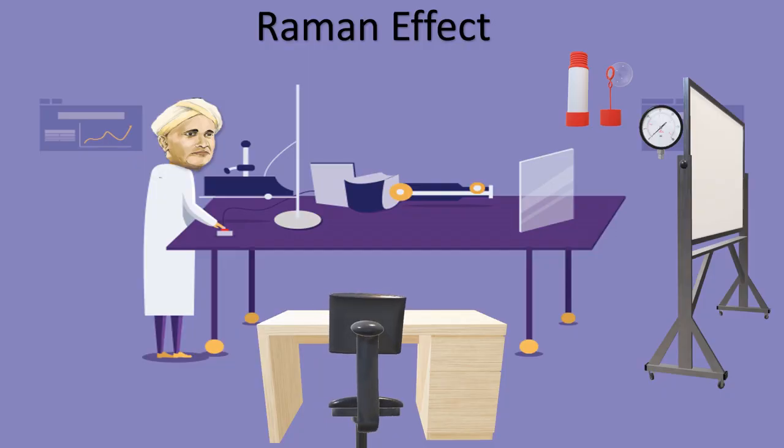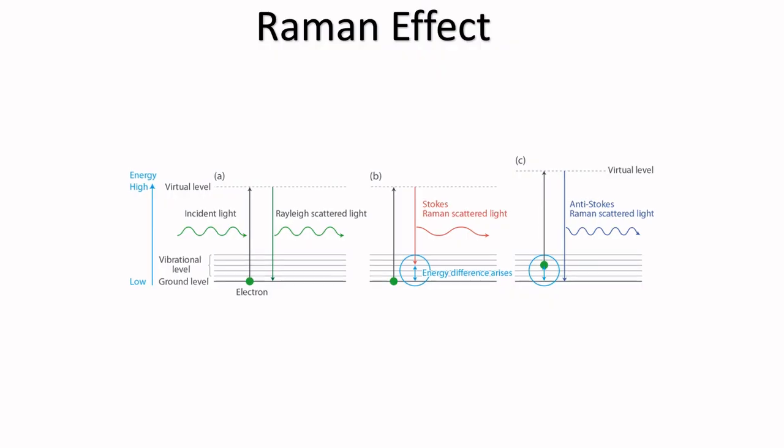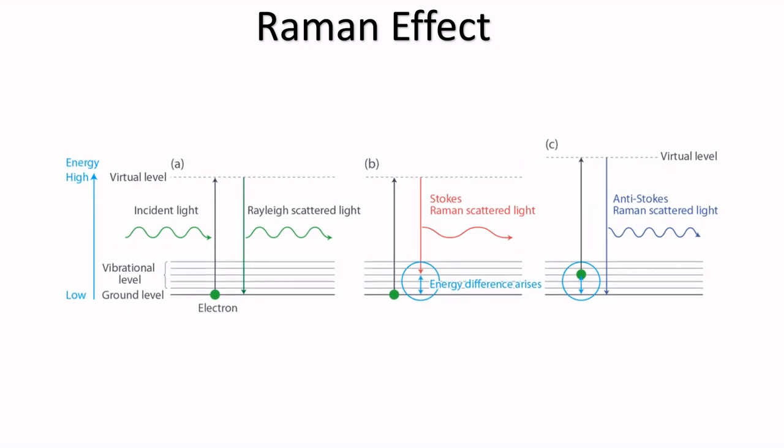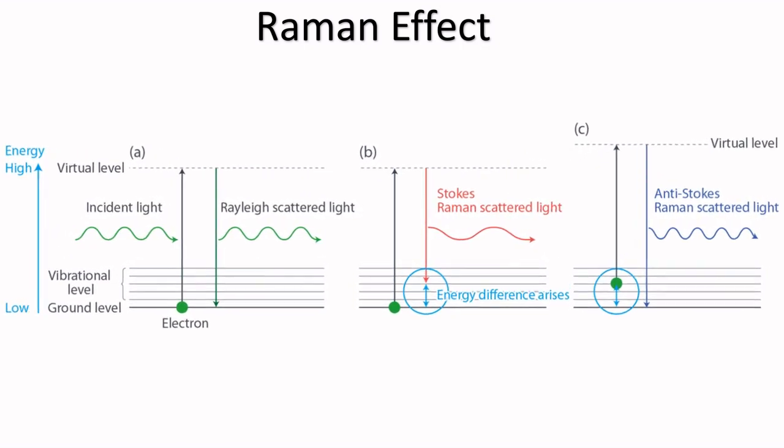If we talk about his discoveries, he discovered the phenomenon which is known as Raman Effect, in which light that passes through a material is scattered and the wavelength of the scattered light is changed because it has caused an energy state transition in the material's molecule.